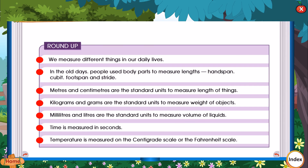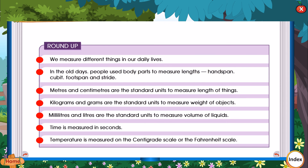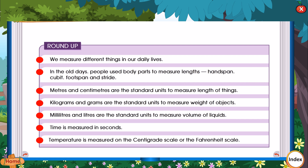Roundup: We measure different things in our daily life. In the old days, people used body parts to measure length — hand span, cubit, foot span, and stride. Meters and centimeters are the standard units to measure length. Kilograms and grams are the standard units to measure weight. Milliliters and liters are the standard units to measure volume of liquids. Time is measured in seconds, minutes, and hours. Temperature is measured on the centigrade scale or the Fahrenheit scale.